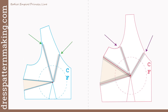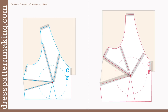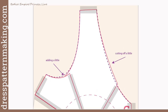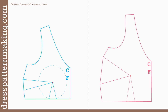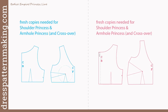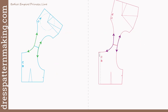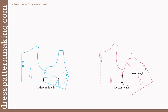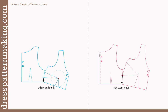Put paper underneath to fill in the gap that's opened up. Cut off and discard the original dart, then tape down both dart legs and draw a straight line from one dart leg to the other, cutting off excess paper. Redraw the armhole curve and neckline curve — closing the darts results in some jagged lines. Smooth out the armhole and neckline, adding and taking off a little as needed. It's a good time to double-check flow through the neckline and armhole curves and that side seam lengths match.